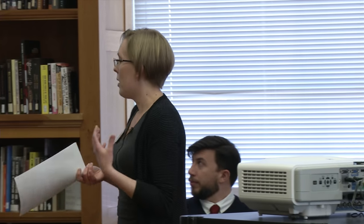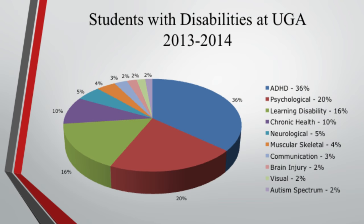I phrase it as 'what do we see' because the first things you think about are physical impairments — mobility impairments, students with sign language interpreters, students who are blind. But in reality, ADHD is our largest population at 36%. It used to be that learning disabilities was our second, but in the last few years we've seen a shift — psychological is now our second largest population, largely anxiety and things of that nature. After that, chronic health — we might see students who are going through chemo, anything like that.